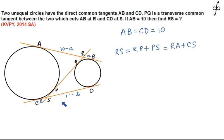RP should be equal to RA and from S, the two tangent lengths SC and SP should be equal. So RS can be written down to be equal to RA that is 10 minus A plus CS and CS is nothing but B.